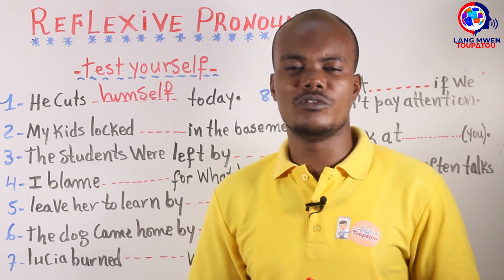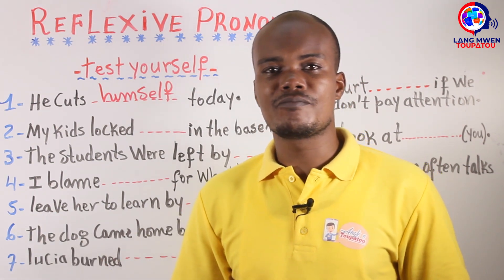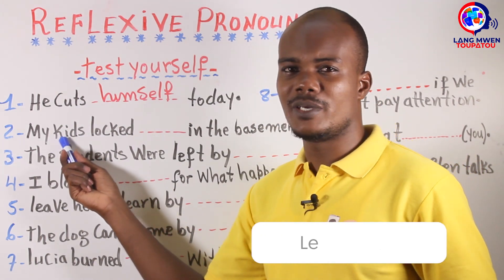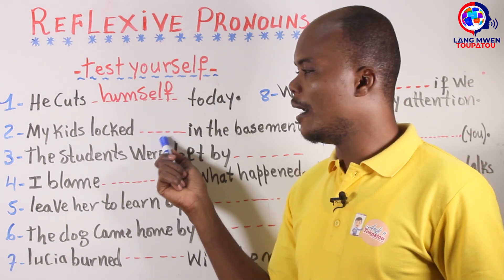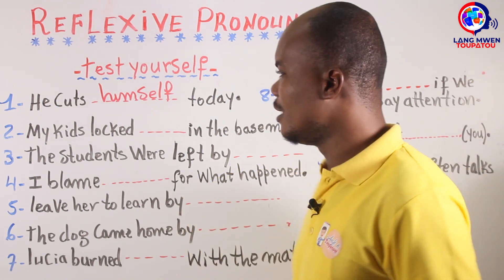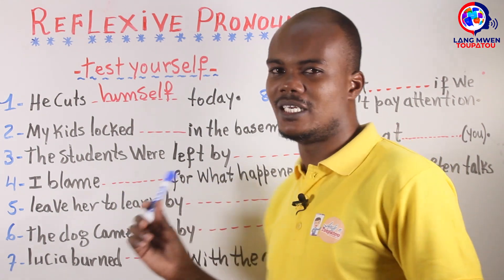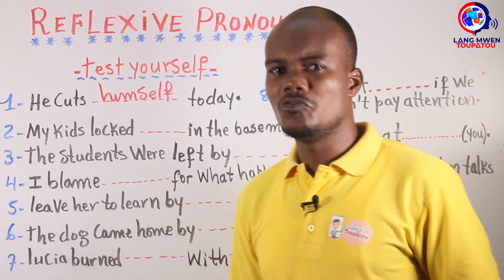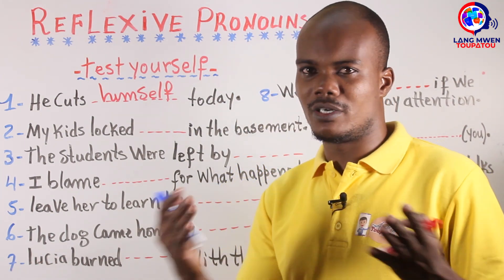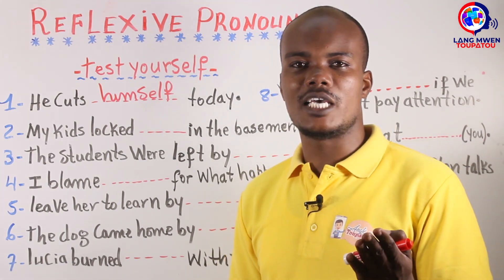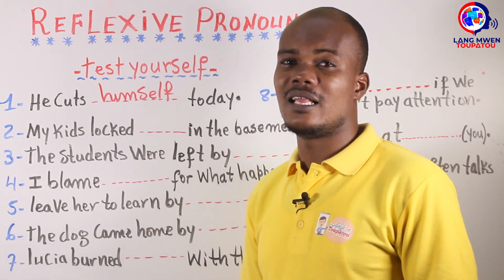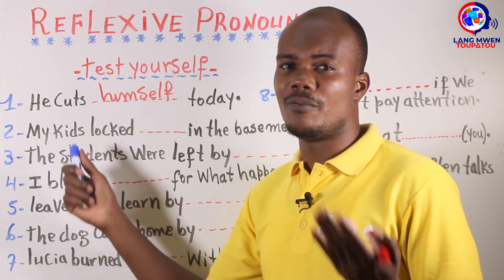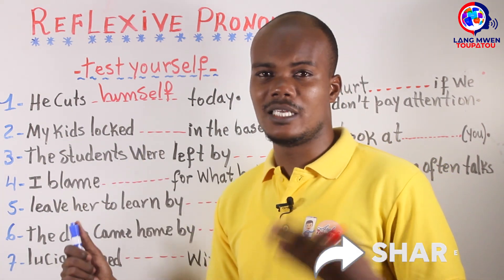Replace 'kids' by a subject pronoun and guess what reflexive pronoun goes with it. My kids locked — what goes there? Pause the video, comment your answer, and then I'll give you the correct answer. The answer is: 'My kids locked themselves in the basement,' because 'kids' is third person plural. You replace it with 'they,' and the reflexive pronoun for 'they' is 'themselves.'